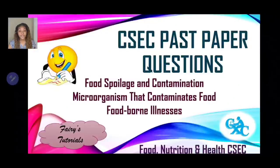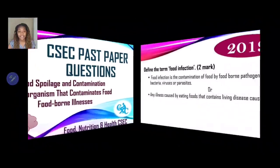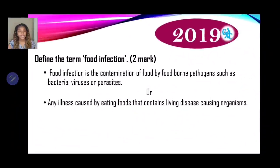We'll be exploring CSEC Food, Nutrition and Health past paper questions for the topics food spoilage and contamination, microorganisms that contaminate food, and foodborne illnesses. Let's kick things off with 2019 exam questions. Define the term 'food infection' for two marks.